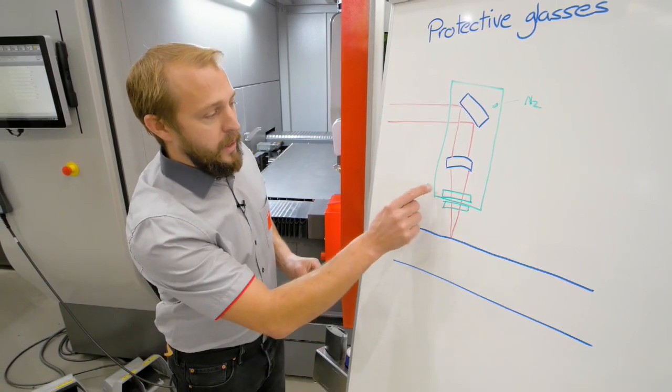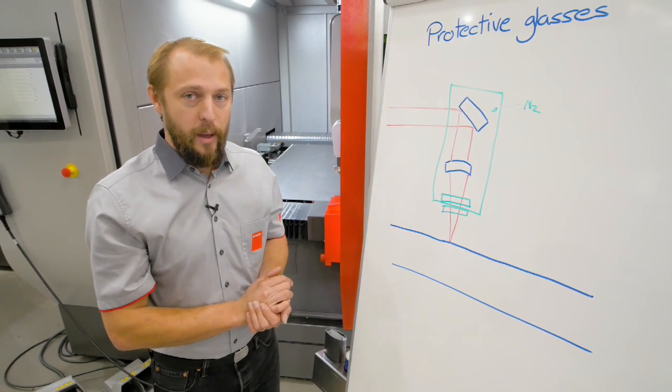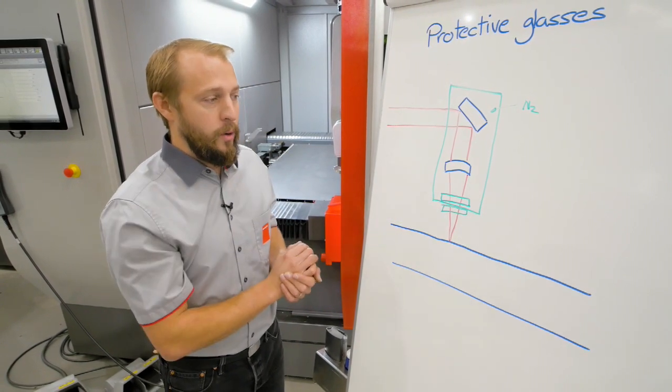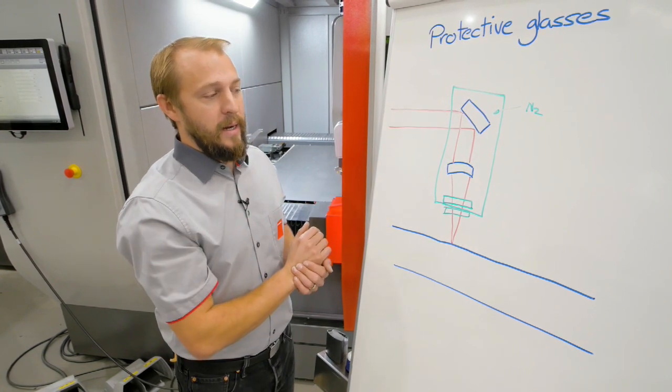This upper protective glass, very important to know, can just be changed by Bistronic. Like this, we make sure there is no chance that dirt is going inside the cutting head.